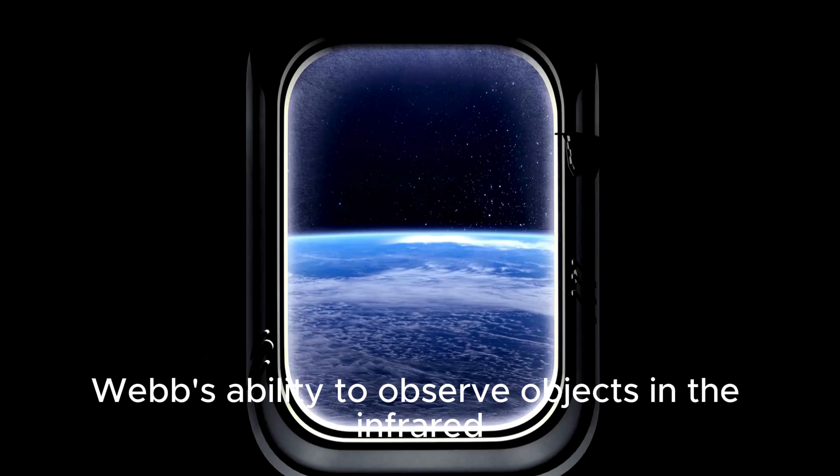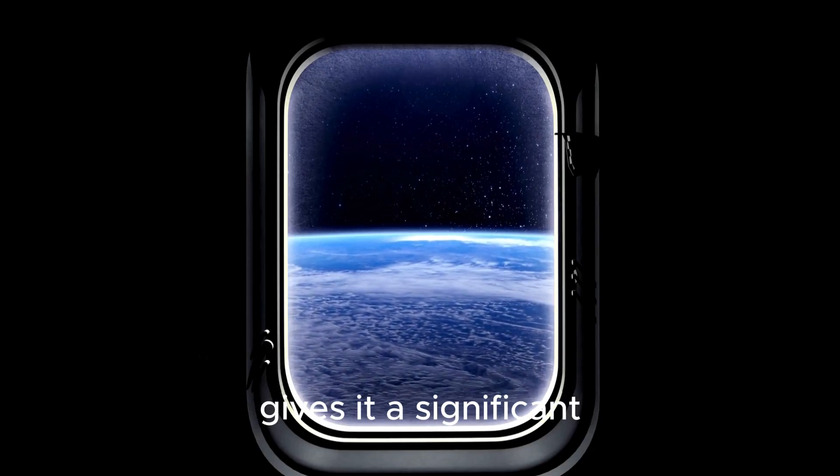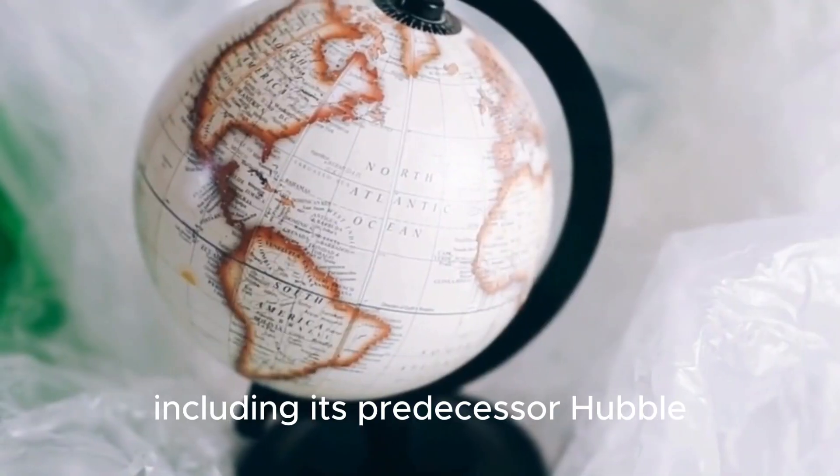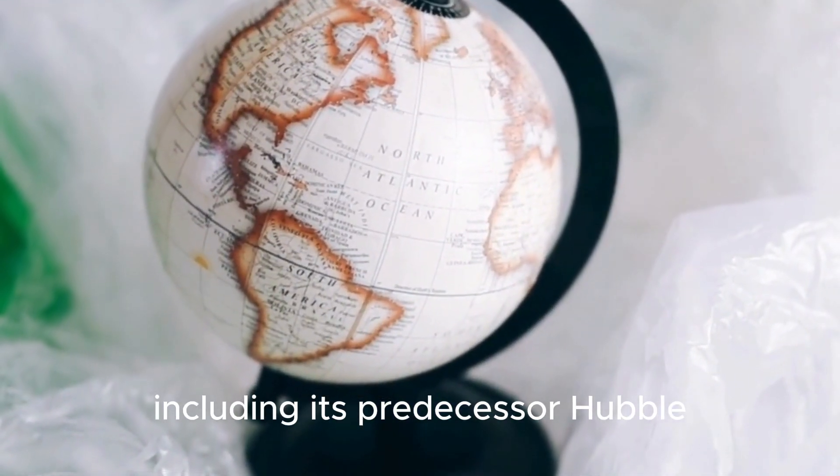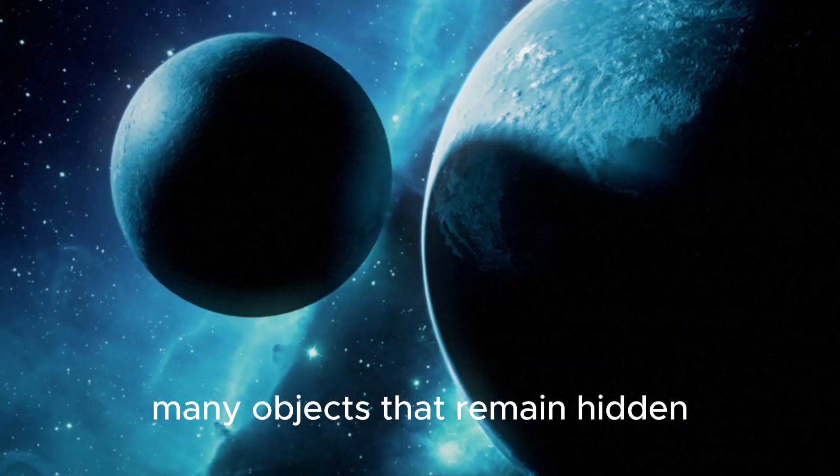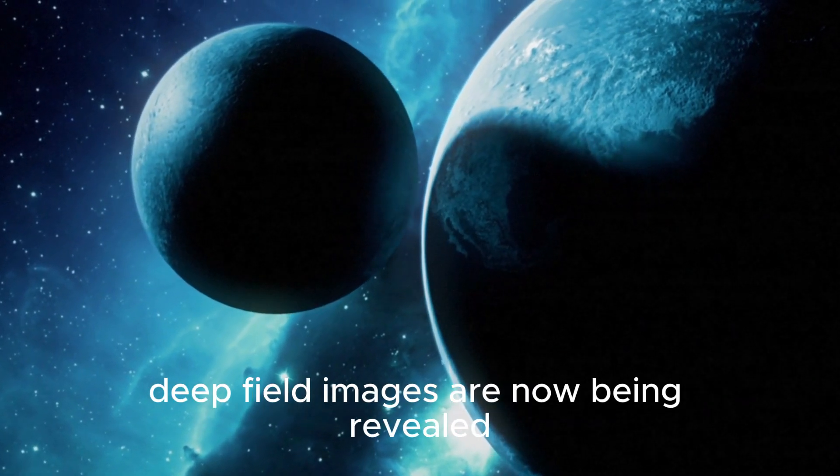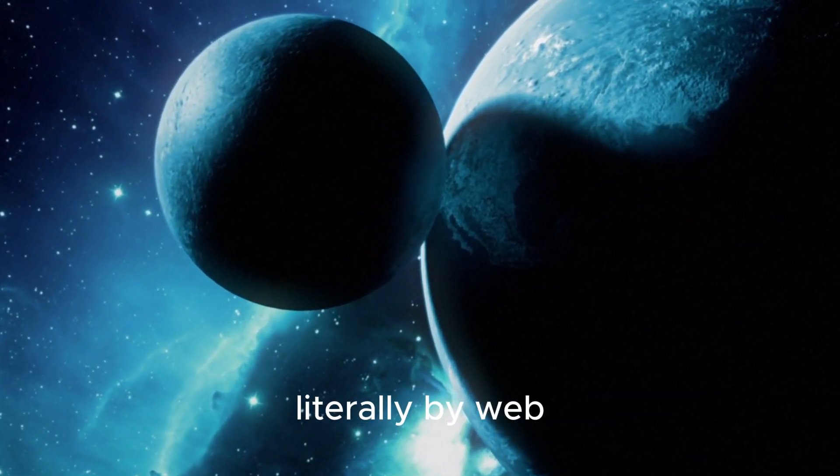Webb's ability to observe objects in the infrared gives it a significant advantage over other space telescopes, including its predecessor, Hubble. Many objects that remain hidden or inconspicuous in Hubble deep field images are now being revealed literally by Webb.